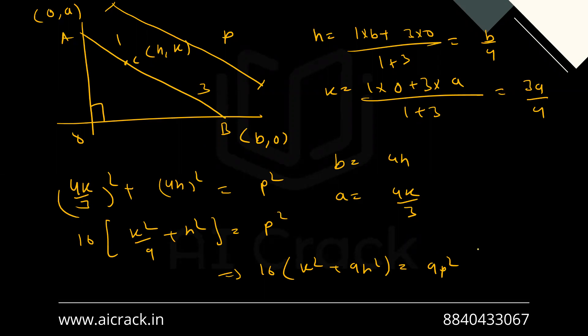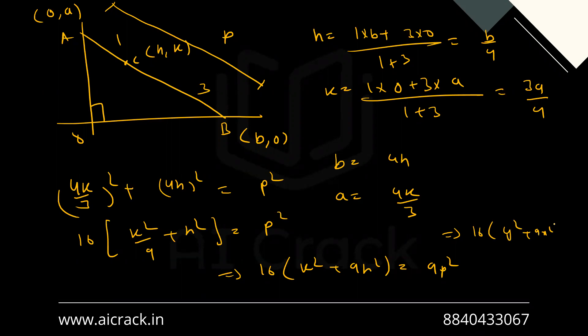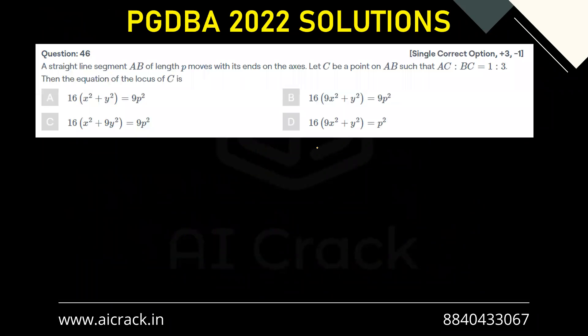If I write in terms of x and y, I'll be getting 16 times y square plus nine x square equals to nine p square. So we have got this.